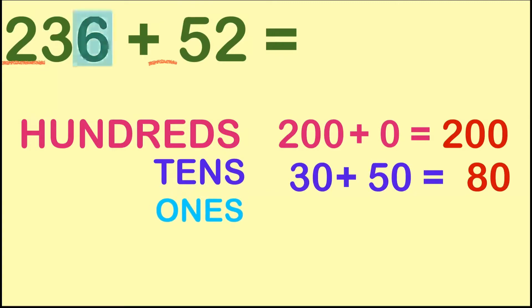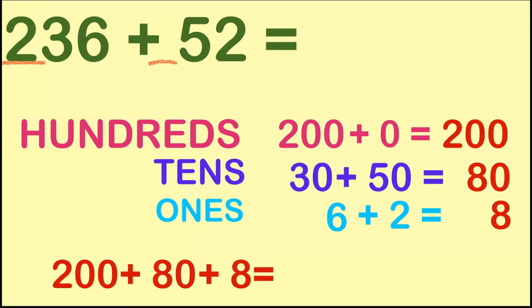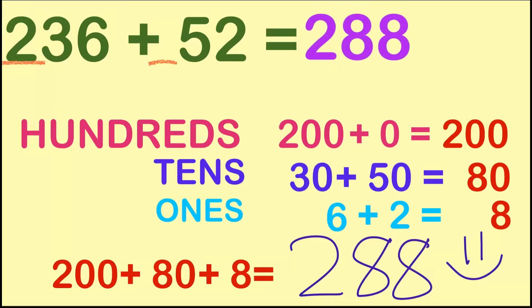Let's proceed at the ones place. At the ones place, we have digit 6, and digit 6 has the value of 6. While on the second number, we have digit 2, and its value is 2. So let's add 6 and 2. 6 plus 2 is equal to 8. So now, let's add up all those values we have. 200 plus 80 plus 8 is equal to 288. So the sum of 236 and 52 is 288.